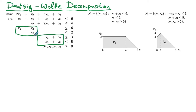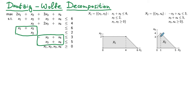We represent the set of x1 and x2 variables satisfying the first two block-diagonal constraints as the set X1 (capital). This set has four extreme points. We denote the set of feasible x3 and x4 with respect to the last two constraints as X2 (capital). Illustrated on the plane with coordinates x3 and x4, X2 capital also has four extreme points.